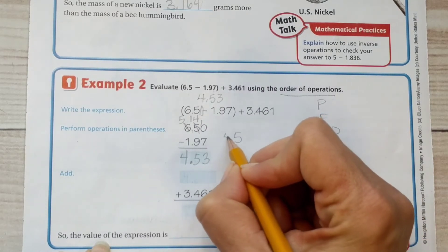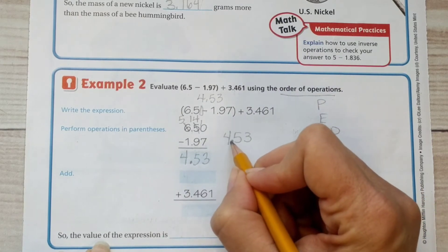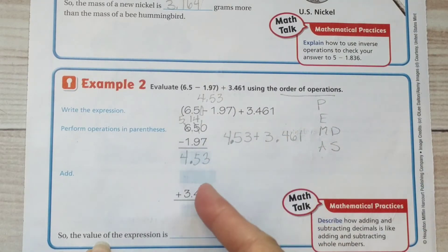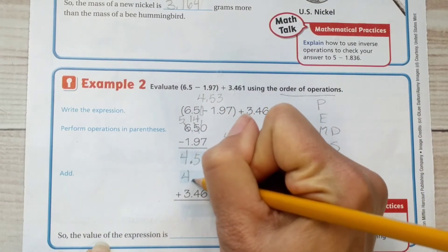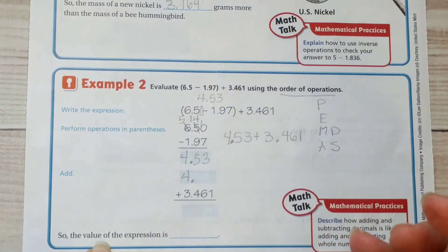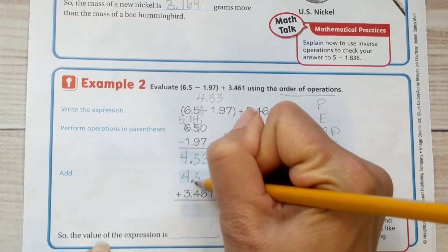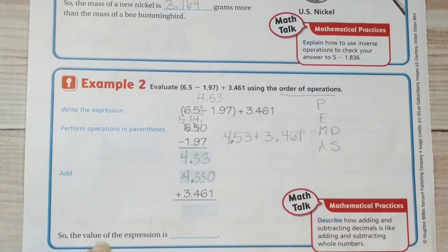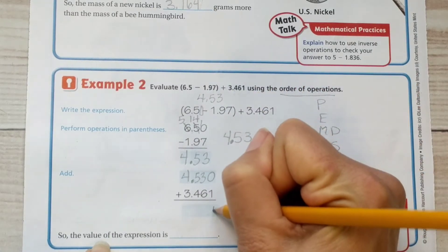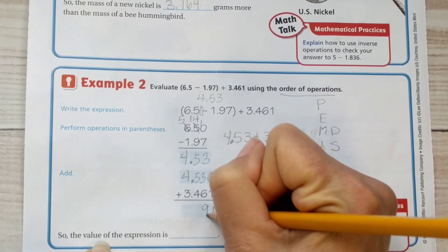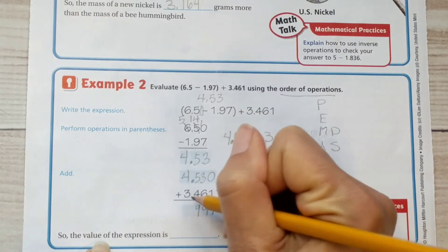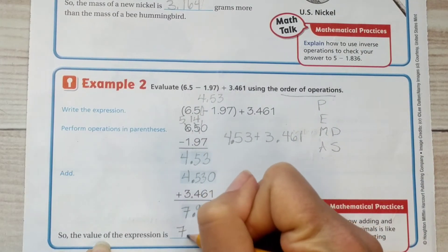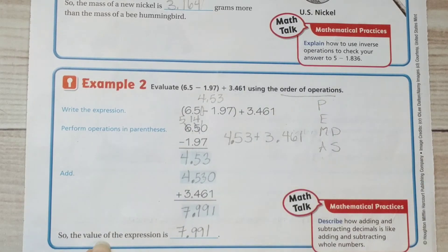Let's rewrite the problem now. 4.53 plus 3.461 is what we're going to do next. We're going to line up our decimals, make sure that our digits are correctly aligned according to their place value. I've got an empty space over this 1, so I'm going to put a 0 there, a little placeholder 0. So 0 plus 1 is 1. 3 plus 6 is 9. 5 plus 4 is 9. Bring down the decimal. 4 plus 3 is 7. So the value of the expression is 7.991, which is very close to 8.